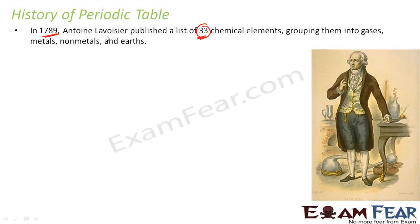So that time, this guy Lavoisier published a list of these 33 elements and he grouped them into gases, metals, non-metals, and earth. These were the classifications at that time. He grouped these 33 chemical elements into these groups, and this was the first effort to group elements — nobody had bothered to group them before.